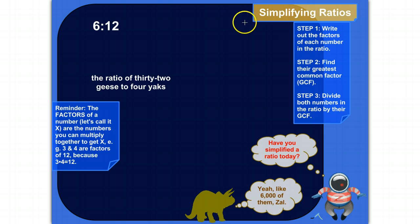So, the steps are: write out the factors of each number in the ratio, then find their greatest common factor, and I'll remind you what that means, and then divide both numbers in the ratio by their greatest common factor, and that's it.